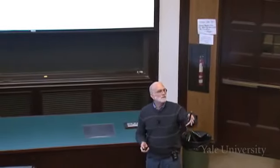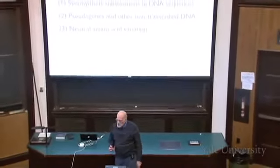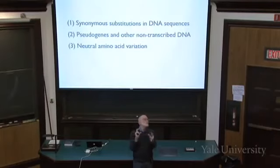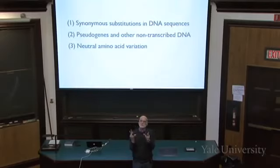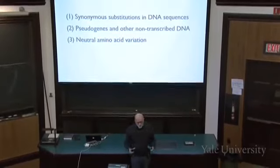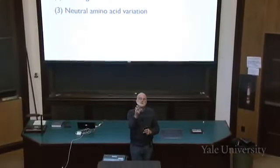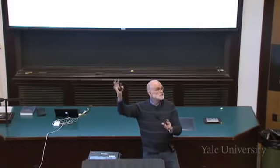Pseudogenes' usual fate is to be eroded by mutation. The useful information once in them gets destroyed, and if they sit around long enough they are no longer detectable as functional genes. There is also neutral amino acid variation, for a variety of reasons. Some amino acids have very similar molecular size and charge properties, so substituting them in a protein doesn't really make much difference to its shape or charge distribution. And if you look at a whole protein — normally with an active site in a very small spatial portion — amino acid substitutions far from the active site have little impact on function.